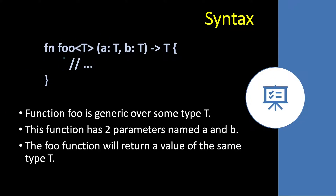The generic function signature looks like this: 'fn foo', and here you specify the generic type T in angle brackets. Then come the parameters a and b, both of type T, and the return type is also T. We can read this as: function foo is generic over some type T, has two parameters a and b, and returns a value of the same type T.